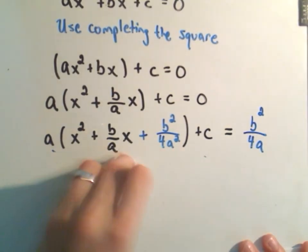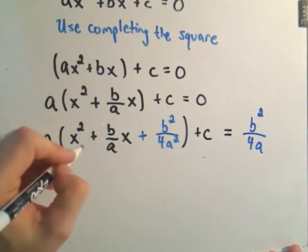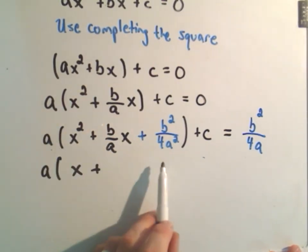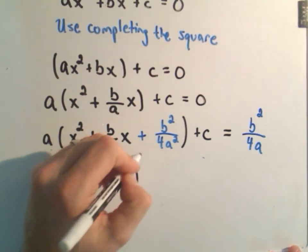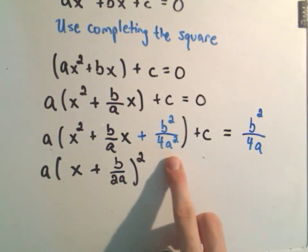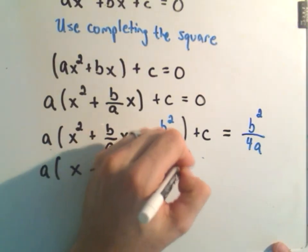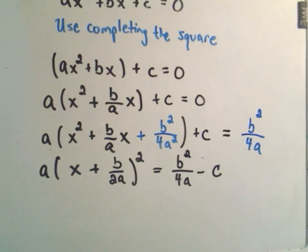At this point, we leave the a alone out front. The point of completing the square is that now you can write the stuff in parentheses as a perfect square. And whatever half of the middle term is, that's how this will factor out. So you can multiply out x plus b over 2a times x plus b over 2a, and we will get this stuff back in parentheses: x squared plus b over a x plus b squared over 4a squared. The other thing I'm going to do is subtract this c term from both sides.